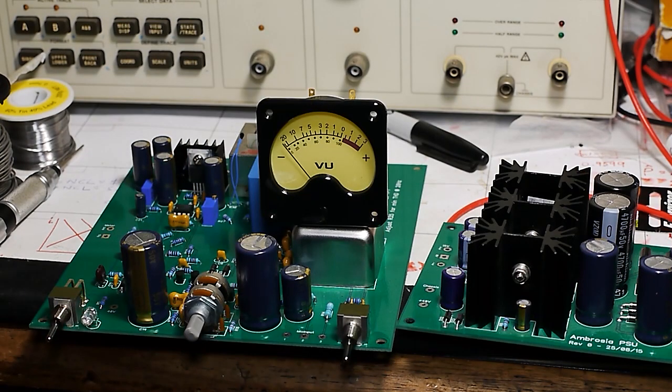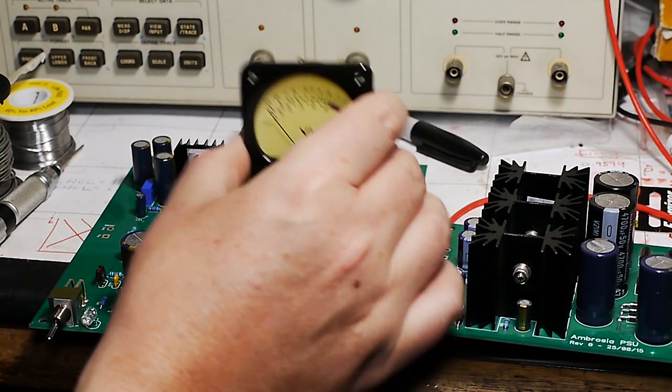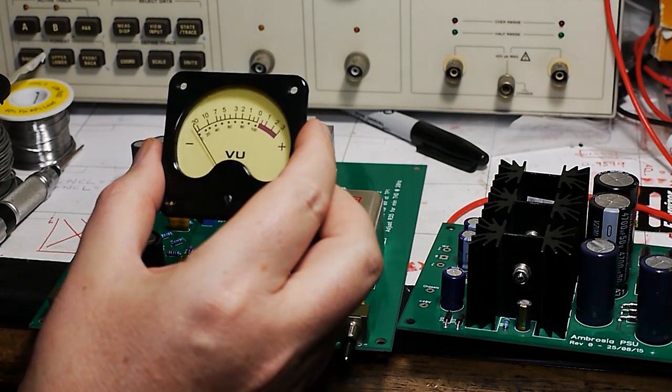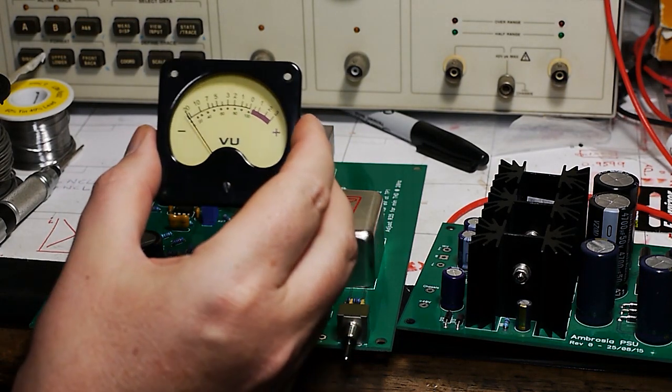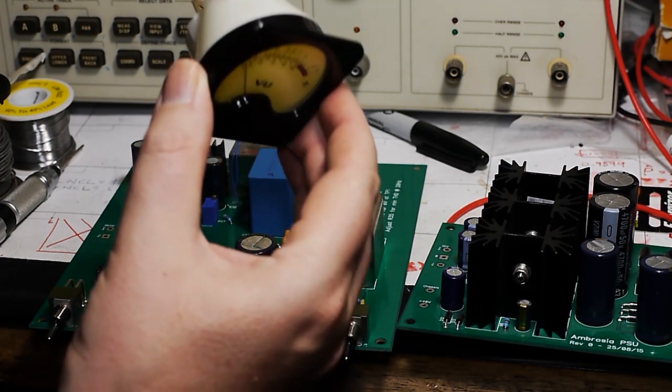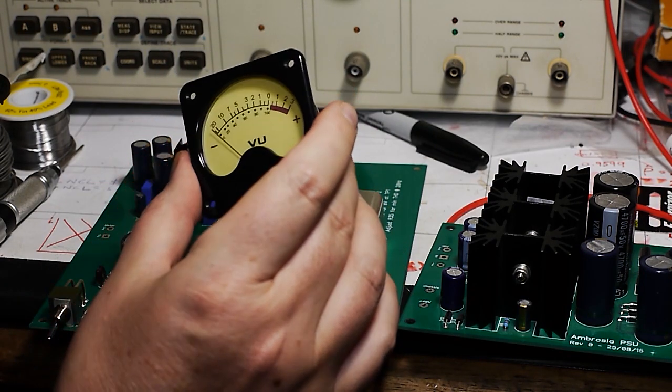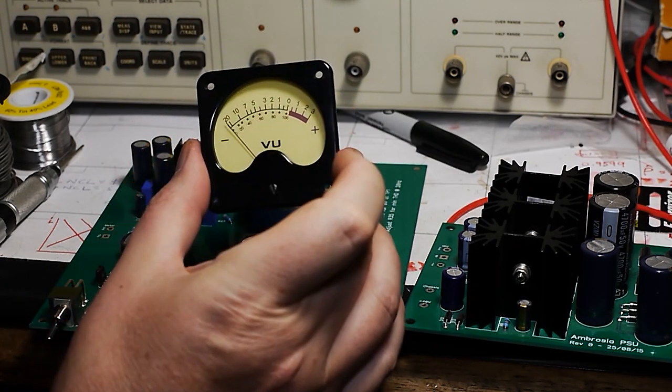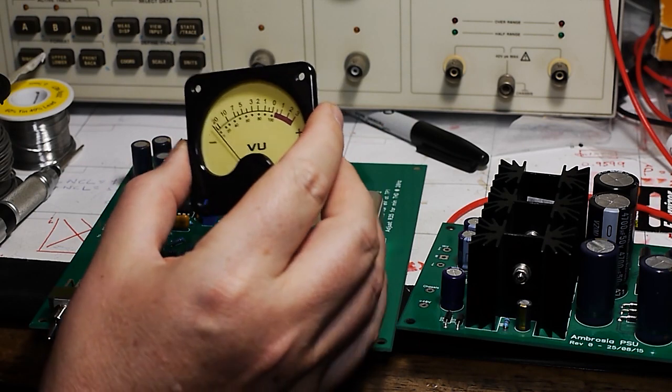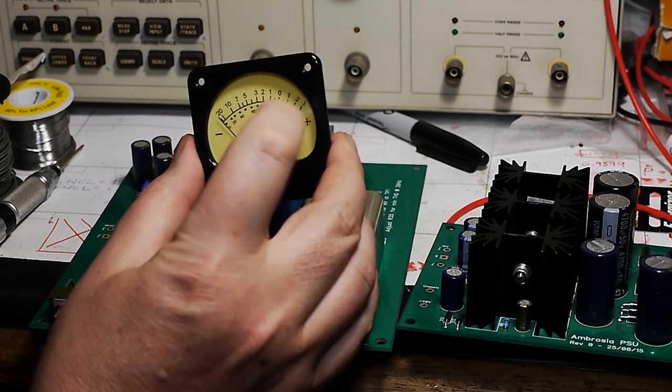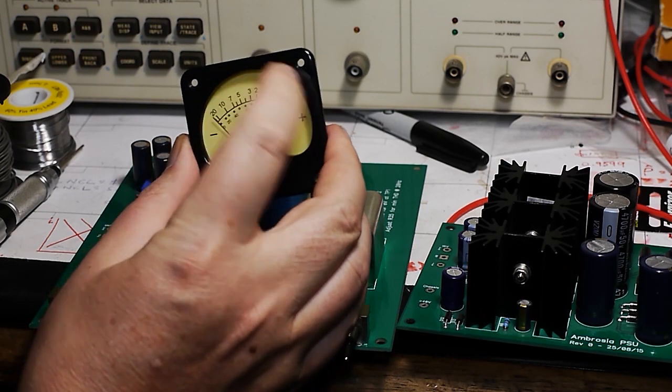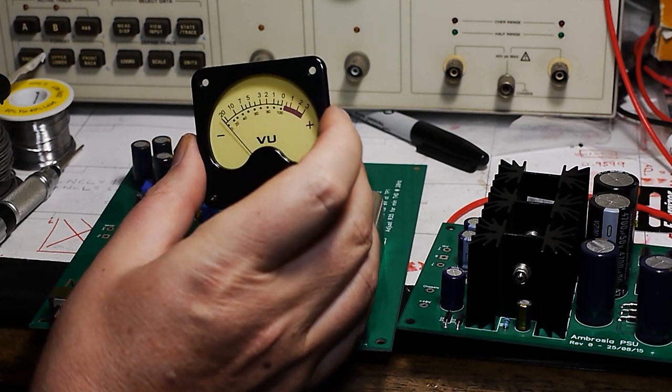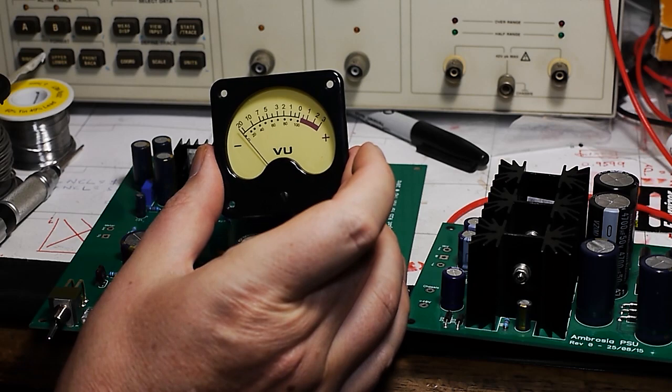Now what you'll find is that these modern meters are much faster responding than a traditional VU meter. They're basically just a little panel ammeter with a VU scale, and you'll find that their ballistics are way too fast. It really doesn't behave like a VU meter at all.